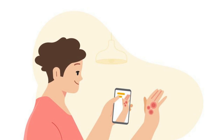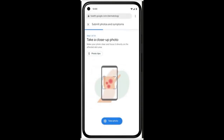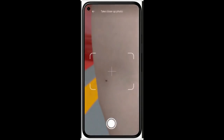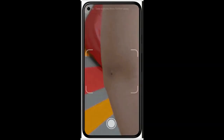Google's AI-powered Dermatology Assist tool is a web-based application which will be launched as a pilot later this year to make it easier to figure out what might be going on with our skin. Once launched, simply use your phone's camera to take three images of the skin, hair, or nail concern from different angles.